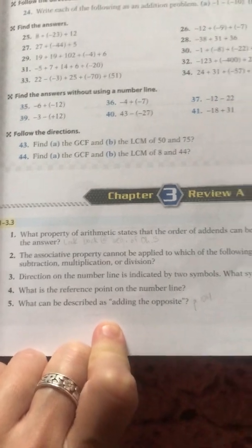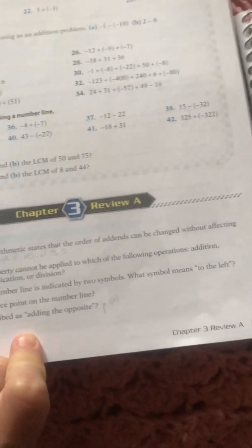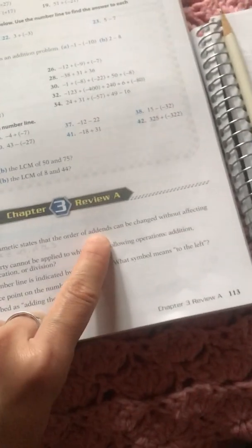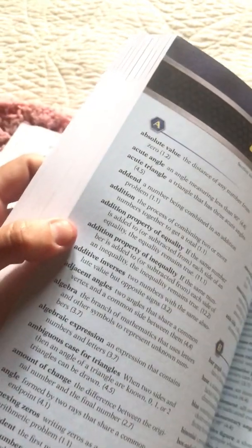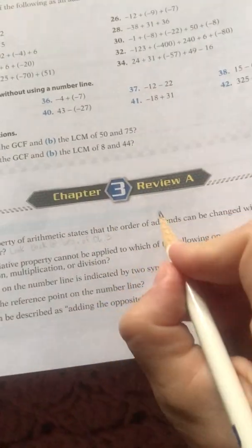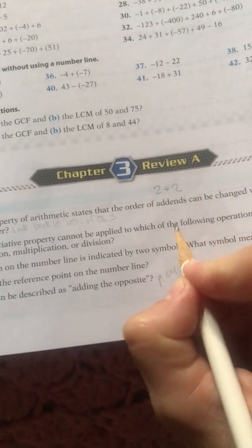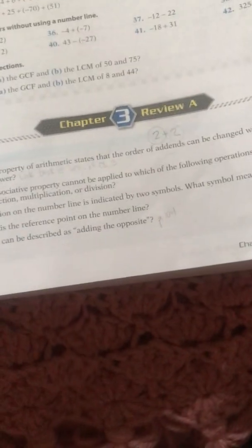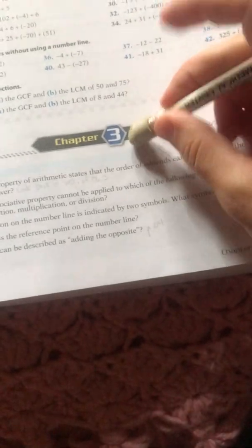The first question: what property of arithmetic states that the order of add-ins can be changed without affecting the answer? Now, if you read that and you're wondering what add-ins means, there's a place in the back of your book called the Glossary and it's in alphabetical order. You can look up the definition of add-in. It's a number being combined in an addition problem. So something like 2 plus 2, there's two add-ins in that problem.